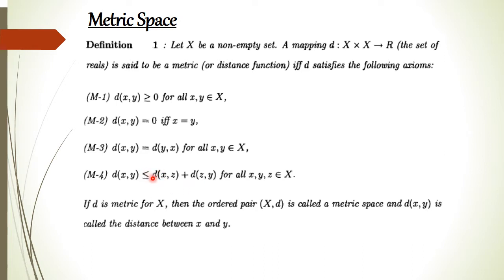This fourth property is called the triangle inequality — the sum of two sides is always greater than or equal to the third side. So if D satisfies all these four properties, then D is said to be the metric for the set X, and the ordered pair (X, D) is called a metric space, and D(X,Y) is called the distance between X and Y.